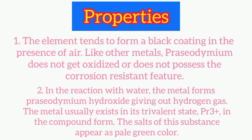Now let's see its properties. First, the element tends to form a black coating in the presence of air like other metals. Praseodymium does not get oxidized or does not possess the corrosion resistant feature. Second, in the reaction with water, the metal forms Praseodymium hydroxide giving out hydrogen gas. The metal usually exists in its trivalent state, that is Pr³⁺, in the compound form. The salts of this substance appear as pale green color.